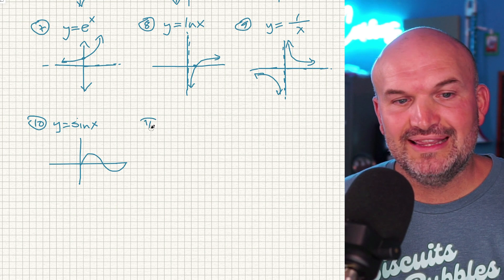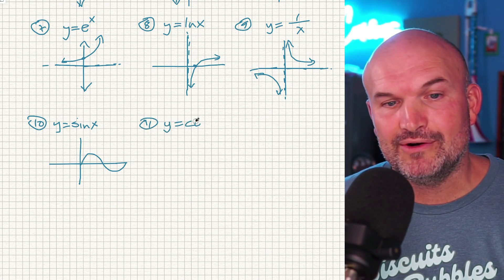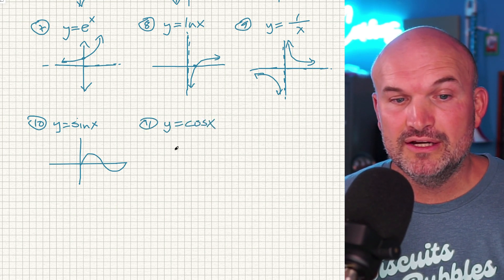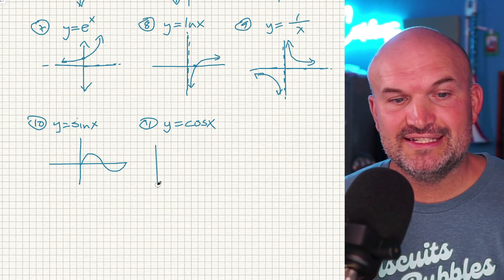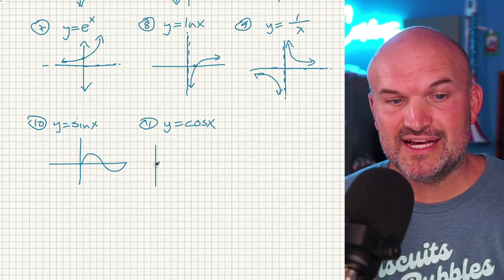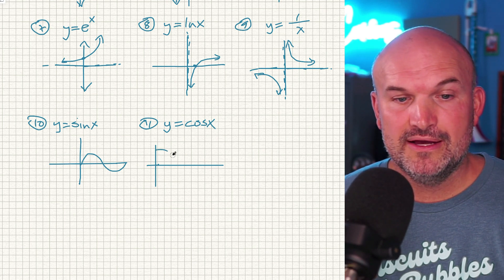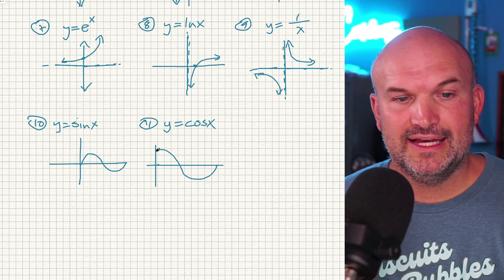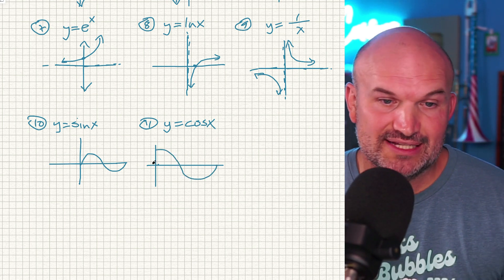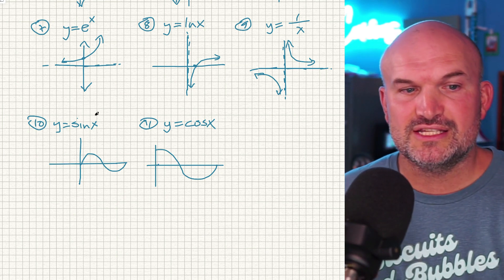The next one, number 11, is going to be the cosine graph. So the cosine graph is going to look very similar to the sine graph. It is not the inverse, though, of that graph. There's actually a really cool relationship between these two graphs. But this one's first period is just going to look like this. And it's going to continue just like the sine graph.